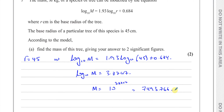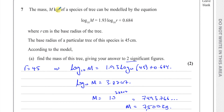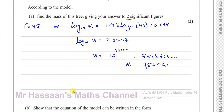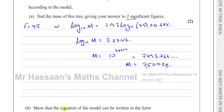To two significant figures, that gives us 7500. The mass is equal to 7500 kilograms. The question asks for the mass of the tree, and the mass is in kilograms, so we should write our answer as 7500 kilograms.